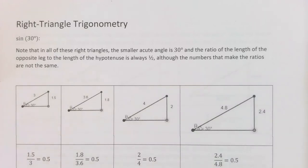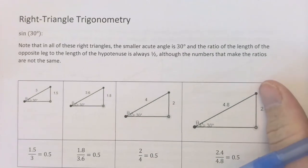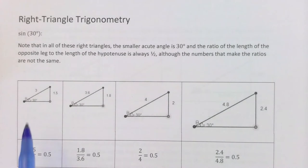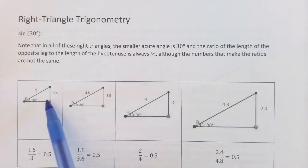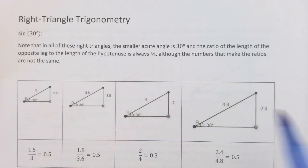In this video we're going to introduce right triangle trigonometry. You may have heard of sine, cosine, and tangent before — I'm starting from scratch here and I'm going to assume you don't know any of this. Here are four right triangles. The right angle is the largest-looking one down in the lower right corner.